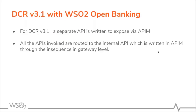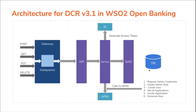Let's jump into DCR version 3.1 with WSO2 Open Banking. For DCR version 3.1 and version 3.2, a separate API is written to expose via API Manager. The APIs mentioned in the previous slide will be routed to an internal API through the gateway level. In this architecture, all the POST, GET, PUT, and DELETE calls will be routed to the internal API through the gateway level using an in-sequence to route to the internal API.